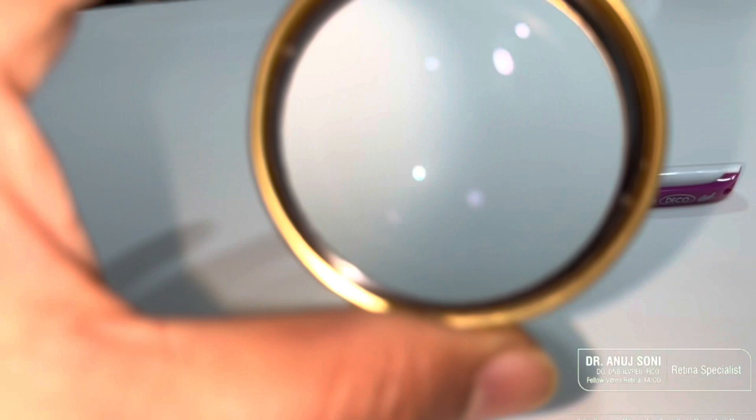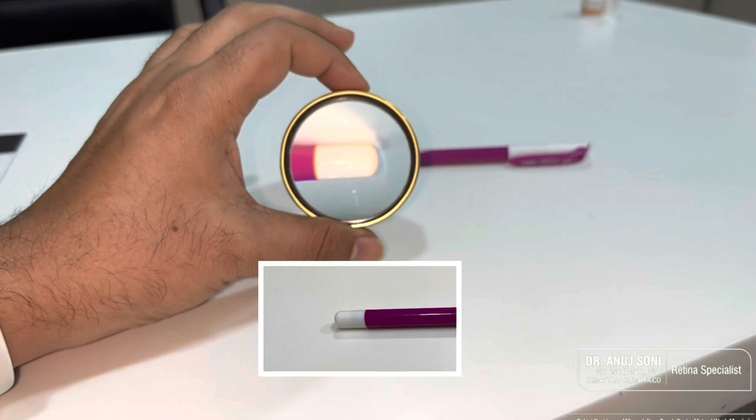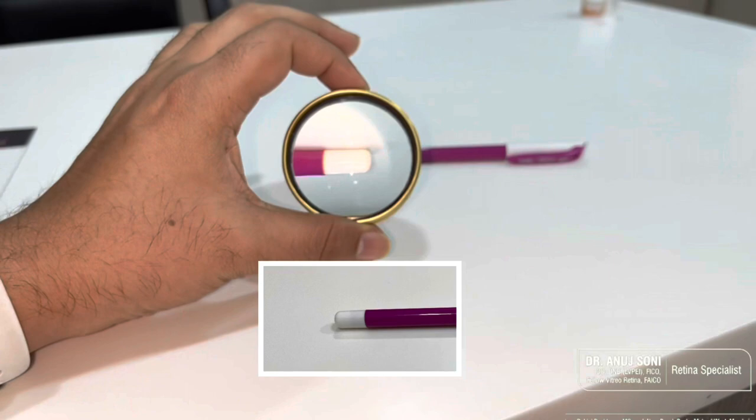Now when I examine the bottom end of the pen, I will see the bottom only. I will not see the cap. Only thing, its orientation would be changed. So you can compare with the original image and now you would understand what it means by an inverted image.